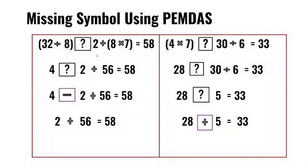We do what's inside the parentheses. 32 divided by 8 is 4. 8 times 7 is 56. We all know 2 plus 56 is 58 and 4 minus 2 is 2. So minus is the missing symbol.